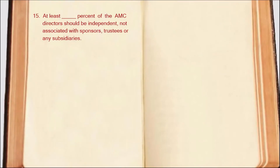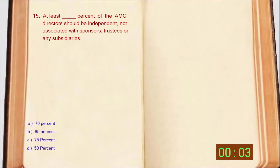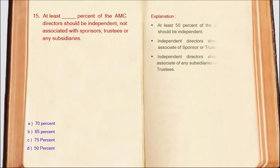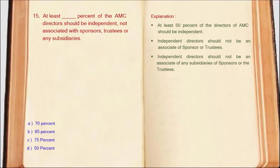Next question: At least DASH percent of AMC directors should be independent — not associated with sponsors, trustees, or any subsidiary. At least 50% of AMC directors should be independent. Independent directors should not be associates of sponsors and trustees. So the correct answer is Option D: 50 percent.